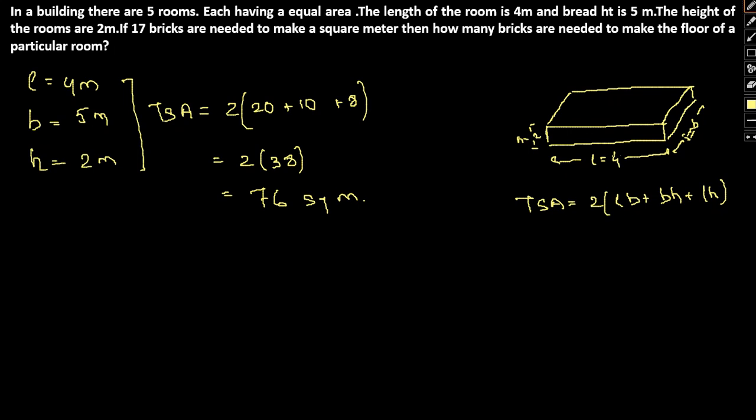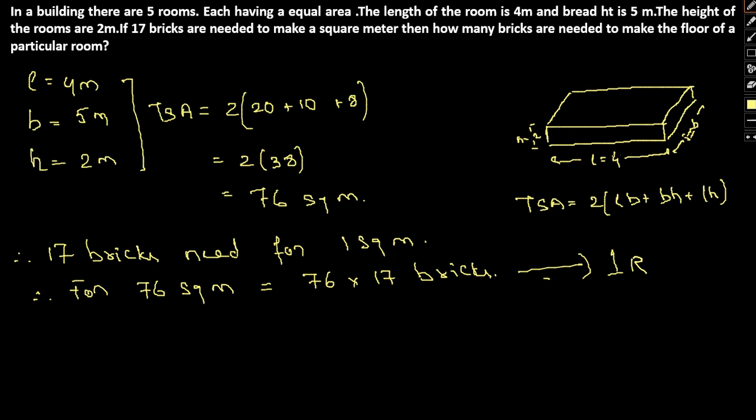Now, what we have is that 17 bricks are needed to make a square meter. So 17 bricks are needed for 1 square meter. Therefore, for 76 square meters, we have 76 into 17 bricks. This is for 1 room.